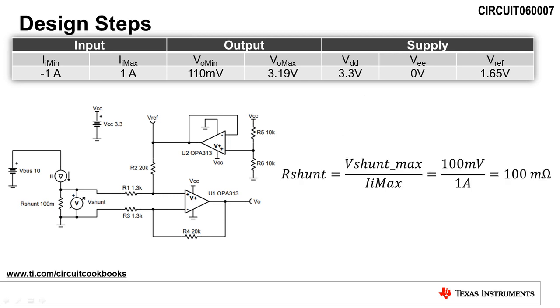The first design step is to calculate the maximum shunt resistance, R shunt, based on the maximum load current of 1 amp and maximum shunt voltage of 100 millivolts. To do this, we divide the maximum shunt voltage by the maximum load current, which yields a value for R shunt of 100 milliohms.